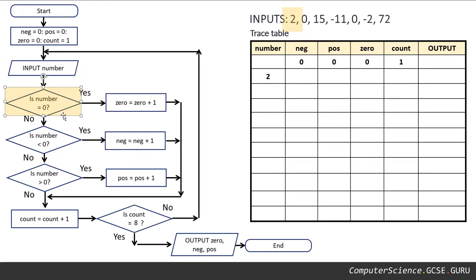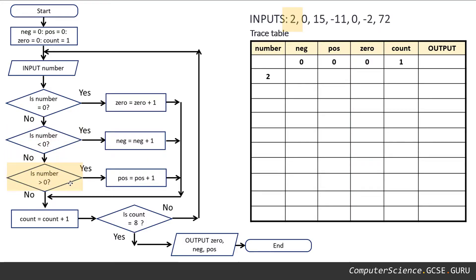Following the flowchart through: is number equal to zero? No, it's not. Is number less than zero? No, it's not. Is number greater than zero? Yes, it is — it's two, and two is greater than zero.